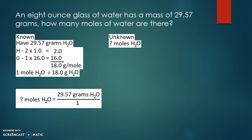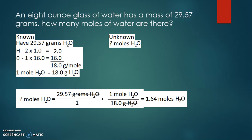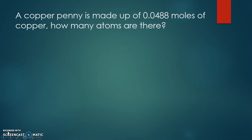Taking our given of 29.57 grams over one, we use the conversion factor: one mole of water to 18 grams of water. We place grams on the bottom and moles on top so that grams cancel out, leaving us with moles. Dividing 29.57 by 18, we find there are 1.64 moles of water in 29.57 grams of water.